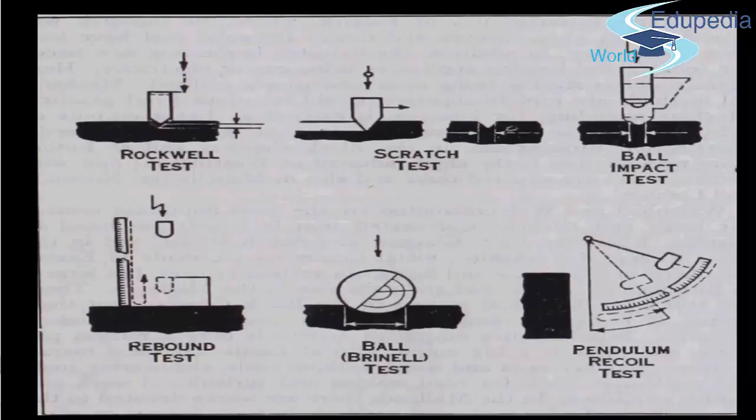Some common hardness tests include the Rockwell test, scratch test, ball impact test, rebound test, Brinell ball test, and the pendulum recoil test. These are some very basic tests we follow to find the hardness of a substance.